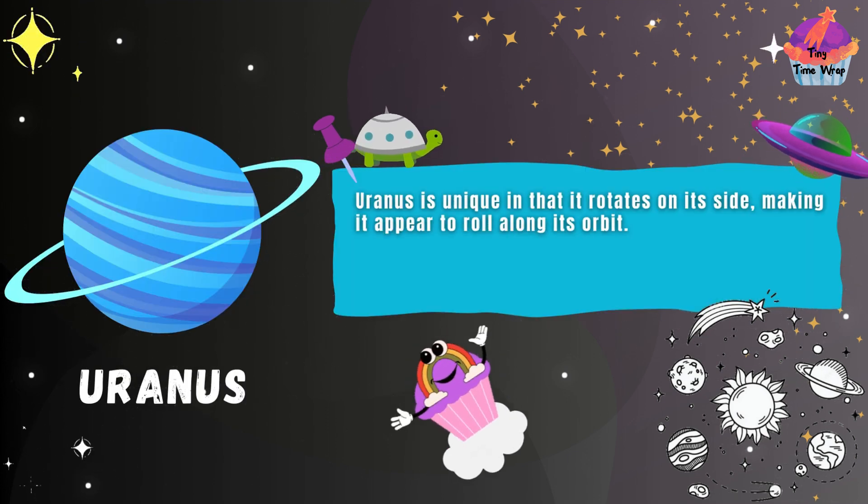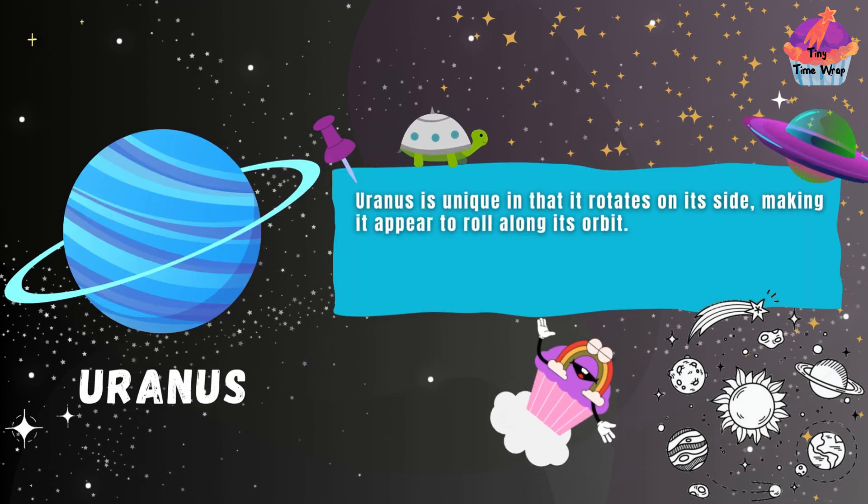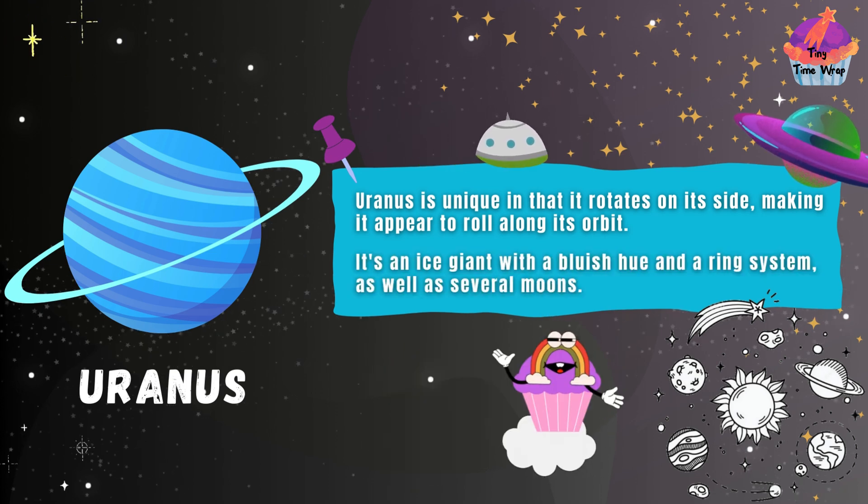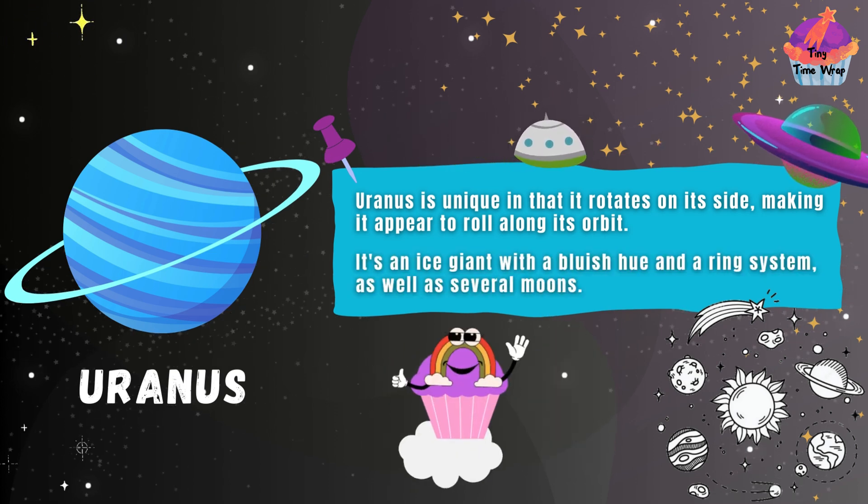Uranus is unique in that it rotates on its side, making it appear to roll along its orbit. It's an ice giant with a bluish hue and a ring system, as well as several moons.